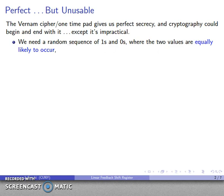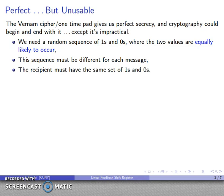We saw what happens if those two are not equally likely to occur. We are able to get some information out of the encrypted text. The sequence has to be different for each message. If you ever reuse the key, you will have compromised the system. And the other problem, the recipient, in order to decrypt the message, has to have the same set of ones and zeros that you use to encrypt the message.